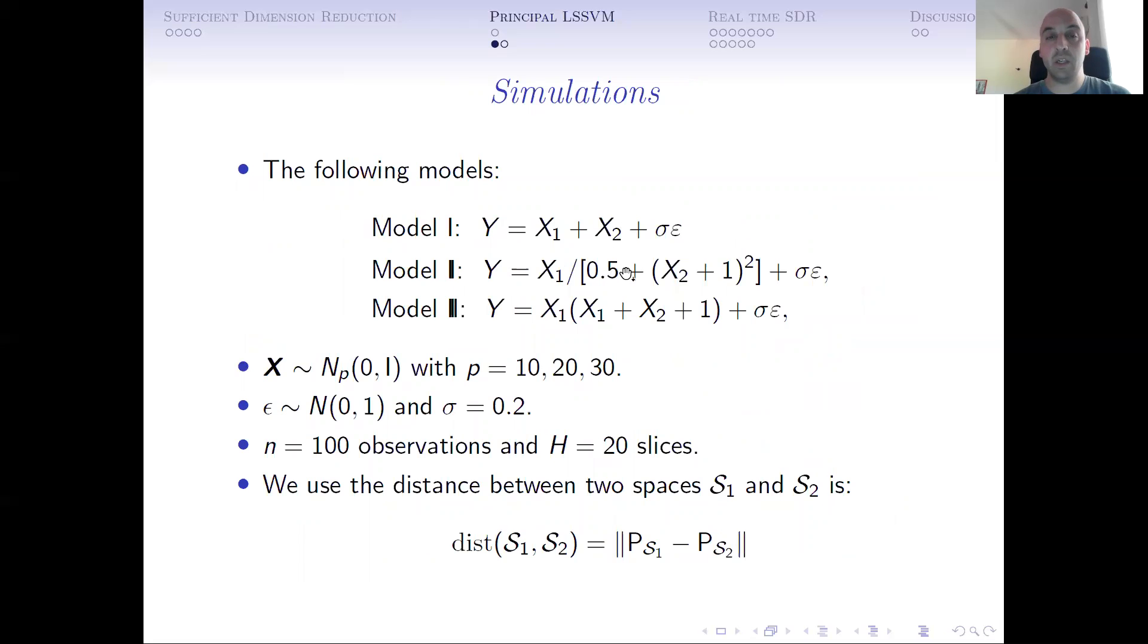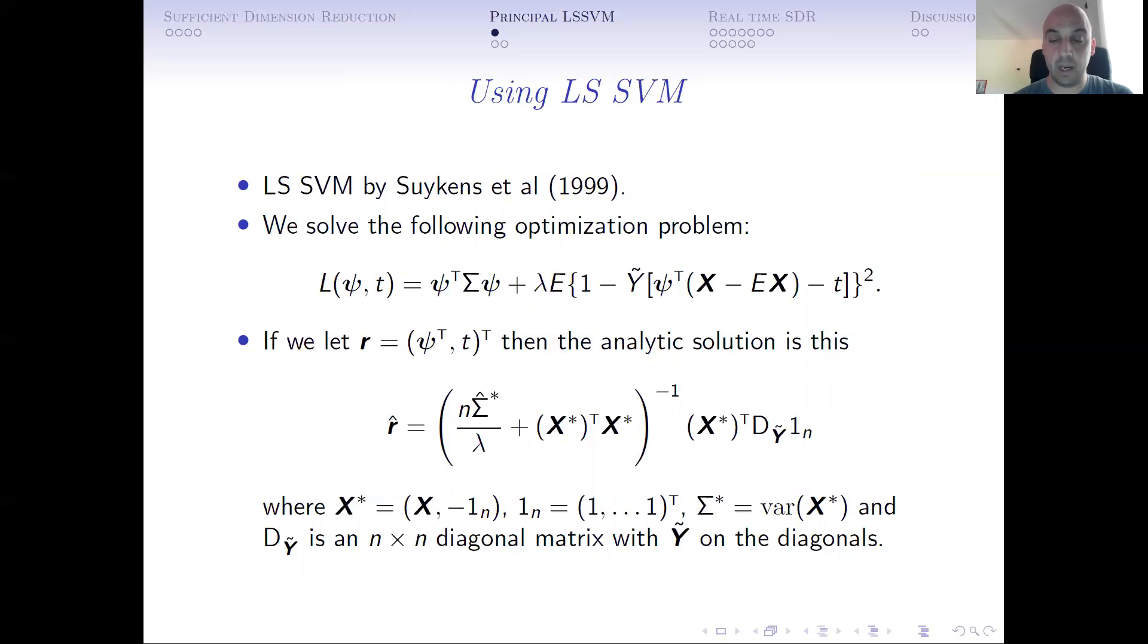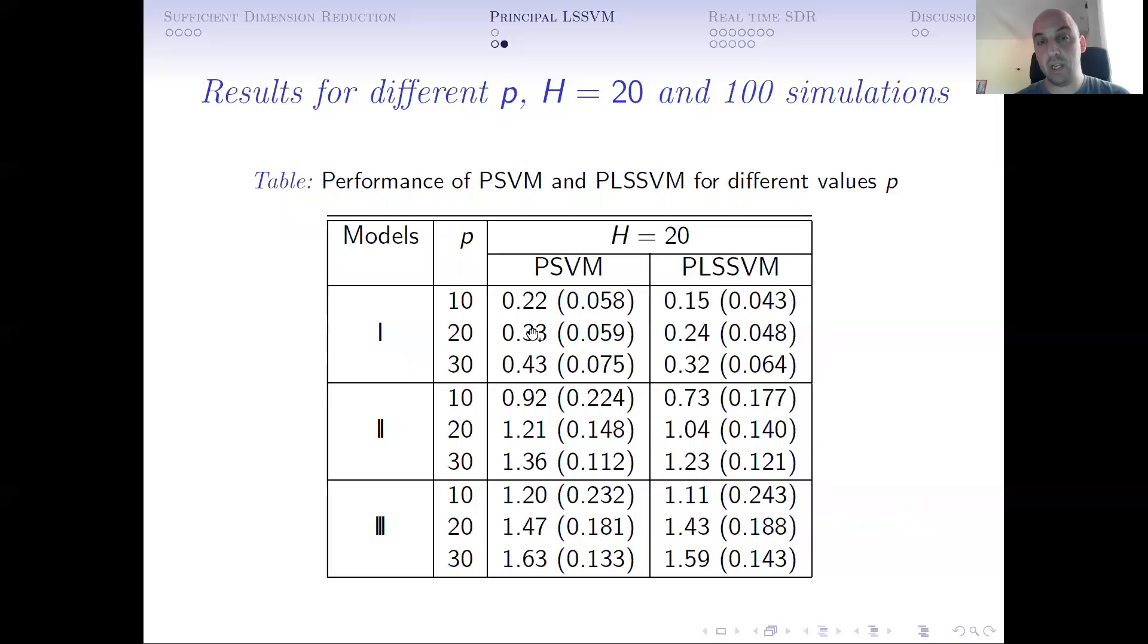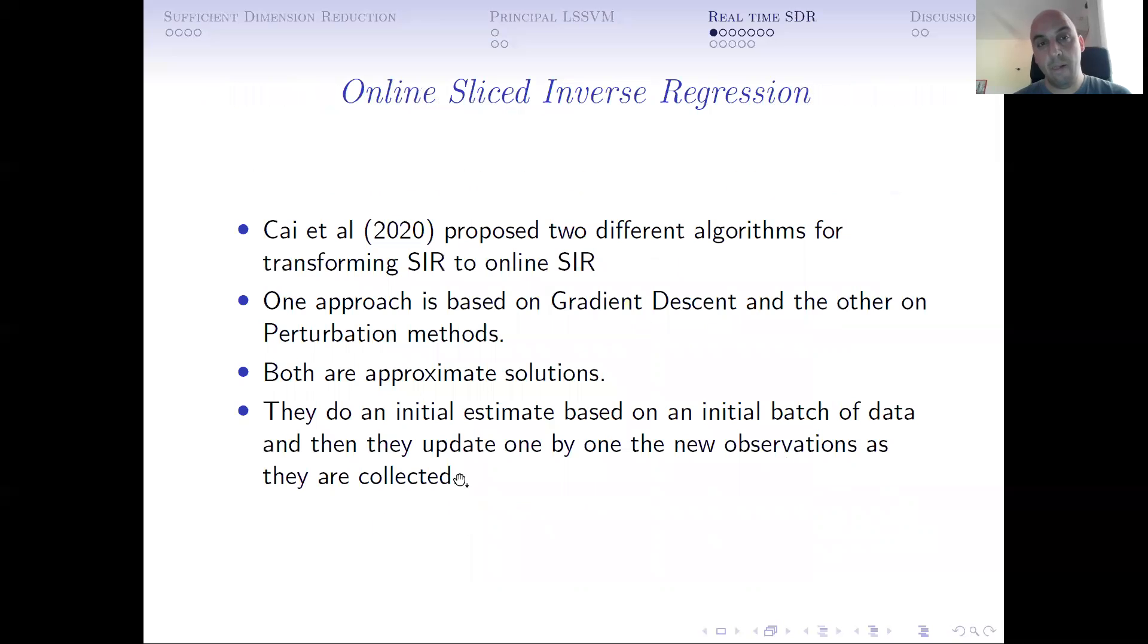We have these three models which I'm going to run simulations to show that the least square approach works better than the 2011 paper by Li, Artemiou and Yin, which is a classic principal support vector machine approach. As you can see, this is the average of 100 simulations with standard errors. We compare the principal support vector machine and the principal least square support vector machine. You can see that it always performs better—closer to zero is better in this case—for all three models, all different values of p.